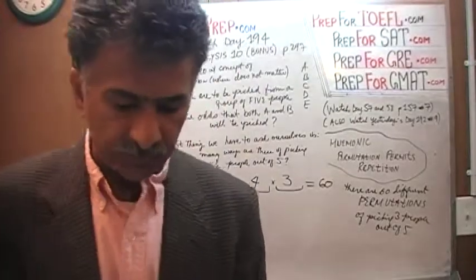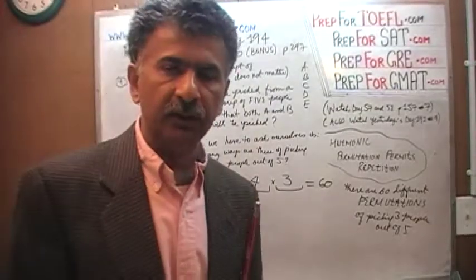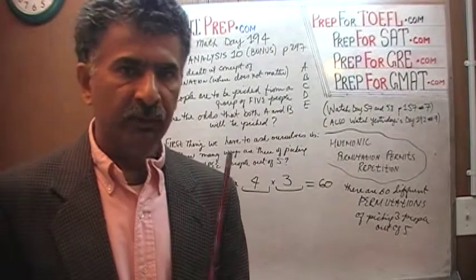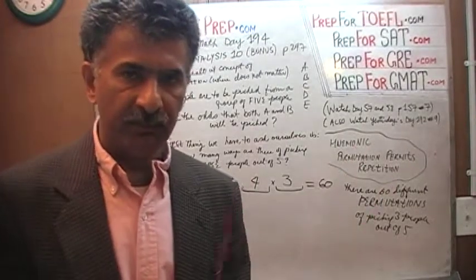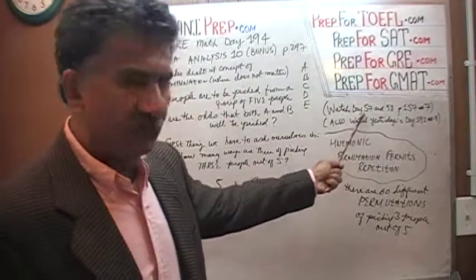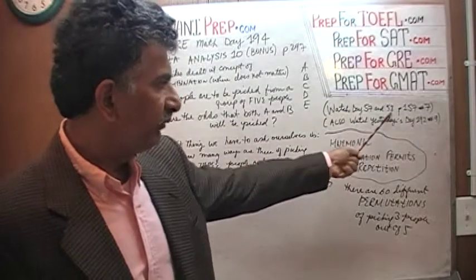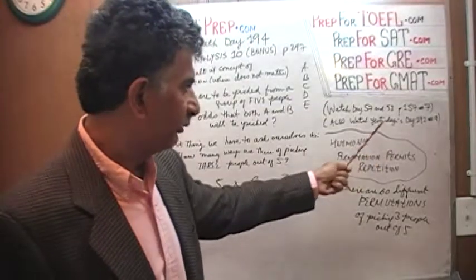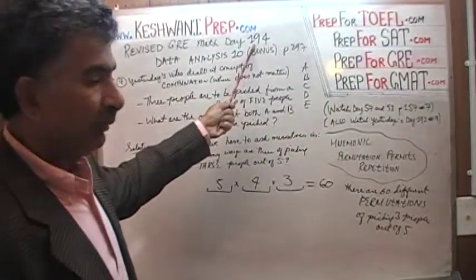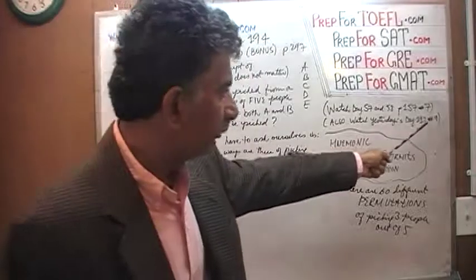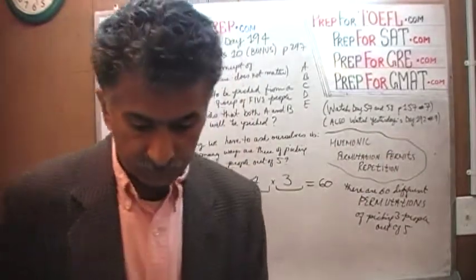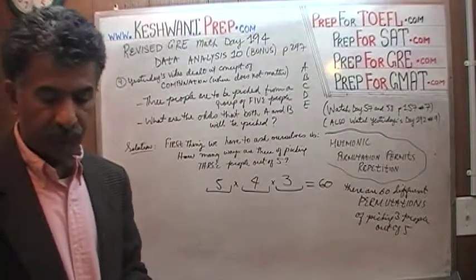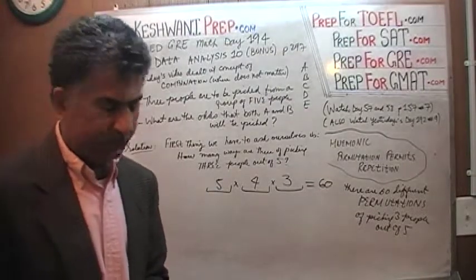If you are still confused about the concept of combination versus permutation and having trouble telling from context which type of problem you are dealing with, go back and watch the fundamentals — day number 57 and 58, where we solve problem number 7 on page 157. Also watch yesterday's video, day 193, and day before yesterday's, day 192, and you should have enough to go on.